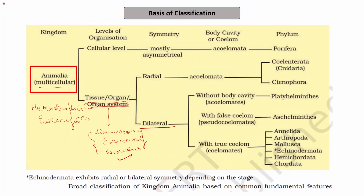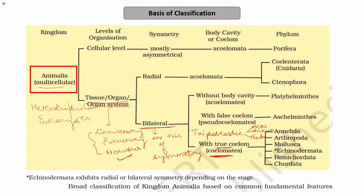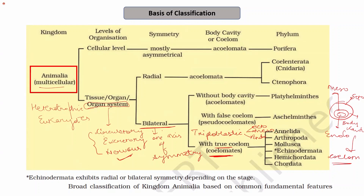They have bilateral symmetry — that is, their body can be divided into two equal halves by only one axis of symmetry. They are true coelomates, meaning they have a true body cavity called the coelom. They are triploblastic, having ectoderm, mesoderm, and endoderm as their germinal layers. The true body cavity, the coelom, is made up of mesoderm and is present in organisms of phylum Annelida.